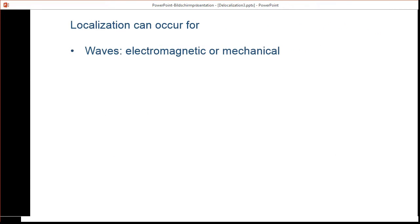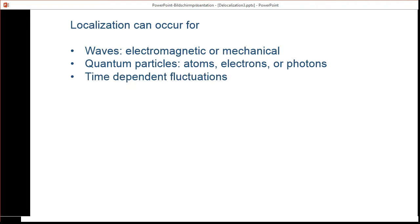The idea is to look at localization, which is a phenomena that can occur for many different systems, such as electromagnetic waves or mechanical waves. It can also occur for quantum particles such as atoms, electrons or photons, or even in time-dependent fluctuations.